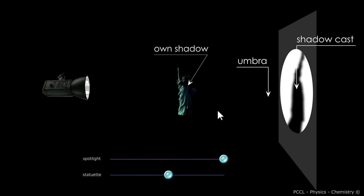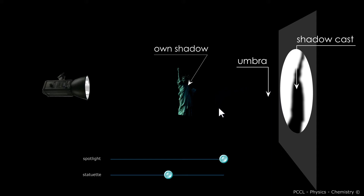Here is the vocabulary. The shadow that is projected onto the screen is called shadow cast. Between the two there is what is called umbra — that is to say, an object which would pass behind the statuette would not be illuminated.